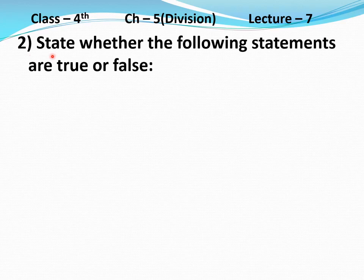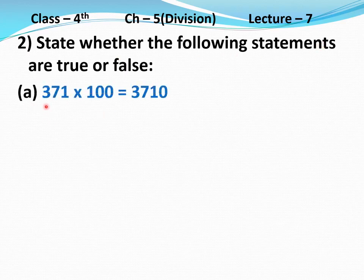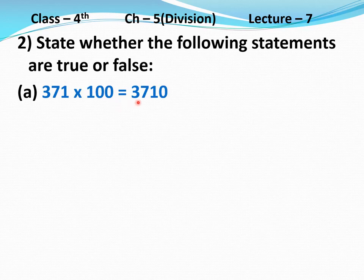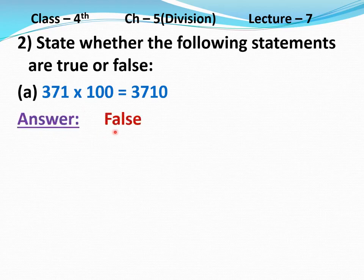Question number 2: State whether the following statements are true or false. Part A: 371 multiply 100 equal to 3710. If you multiply 371 by 1 and put two zeros at the end, the product should be 37100, not 3710. So this statement is false. Answer: False.